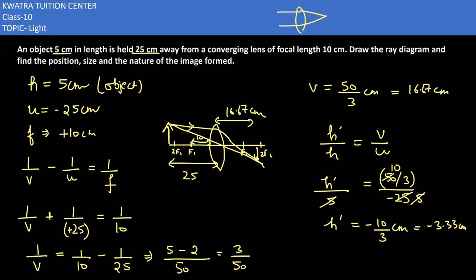And it will be between f2 and 2f2. What is the nature of the image? It would be real, inverted and diminished. Right? So that would be your answer for question number 6.